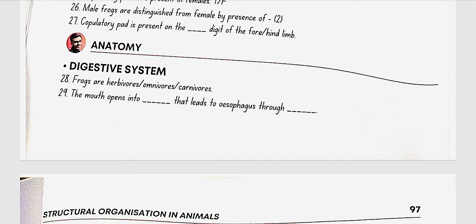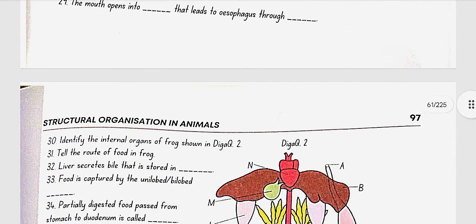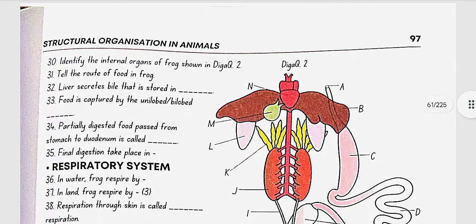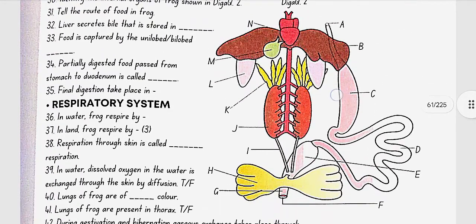Anatomy digestive system. Frogs are herbivores, omnivores or carnivores. So, frogs are carnivores. The mouth opens into the buccal cavity that leads to esophagus through the pharynx. Identify the internal organs of the frog shown in diagram 2. So, here in diagram 2,